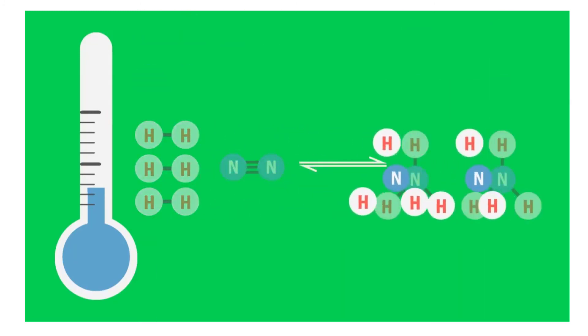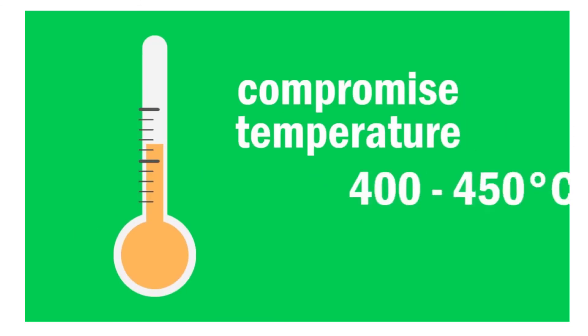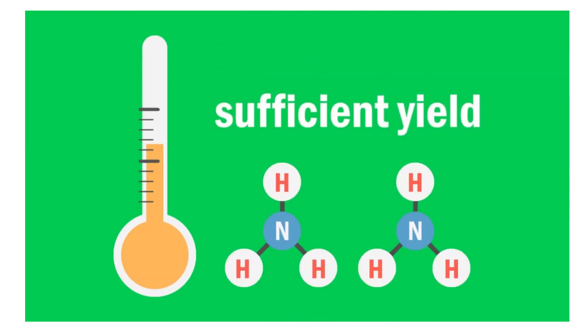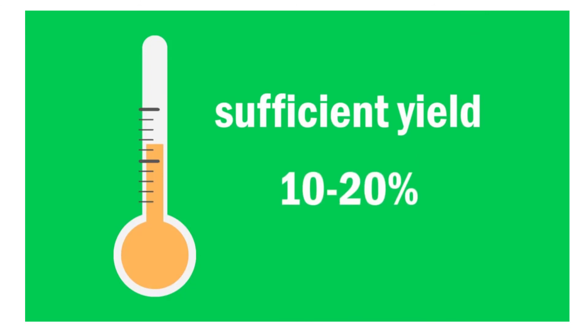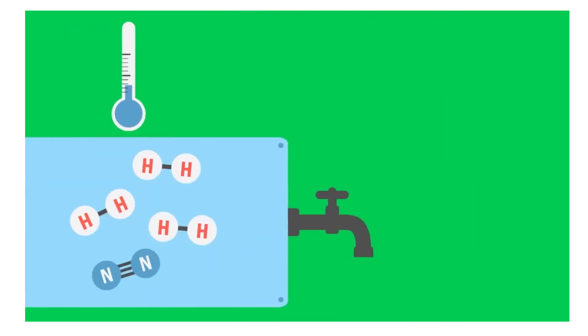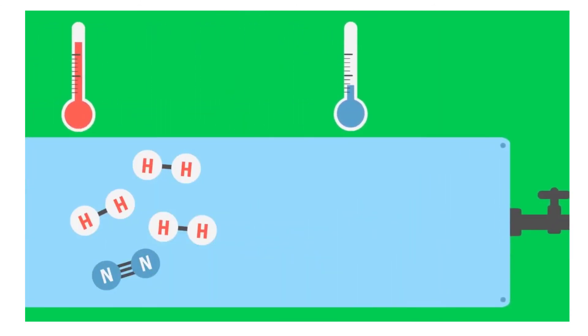If a low temperature were used, the rate of reaction would be very slow, though the exothermic reaction would be favored. It would actually take a long time for equilibrium to be reached, so a compromised temperature of 400 to 450 degrees Celsius ensures that the reaction proceeds with sufficient yield. The yield of this process is 10 to 20%. Remember from the introduction that unused gases are recycled, so no reactants are wasted.